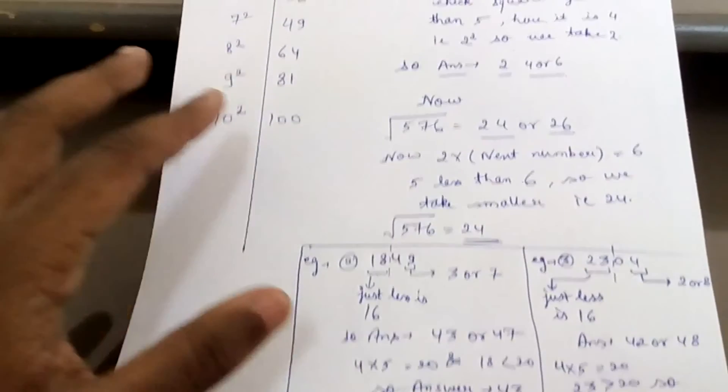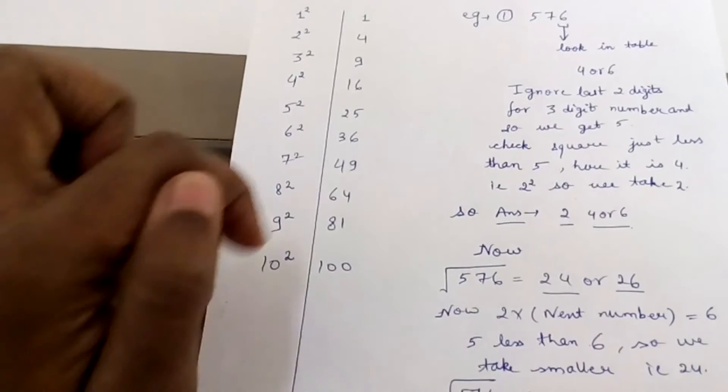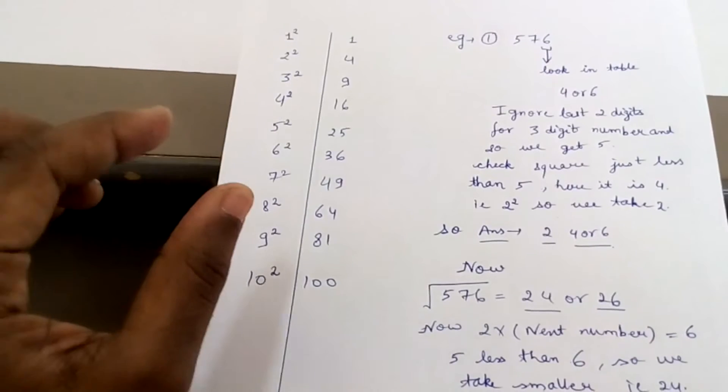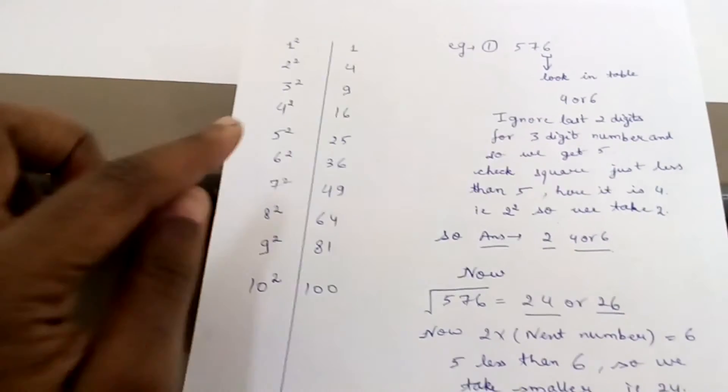Just below 18 is 16, so correspondingly the tenth digit of the square root will be 4. So you write 4, so answer would be 43 or 47.